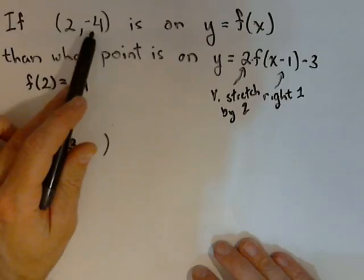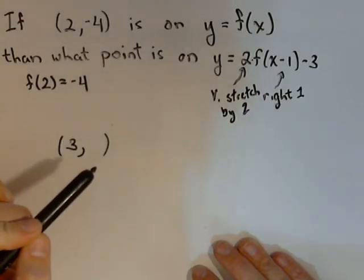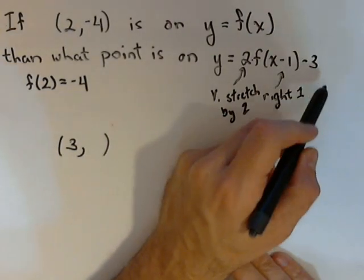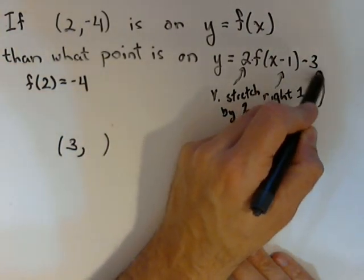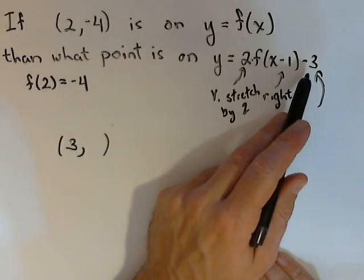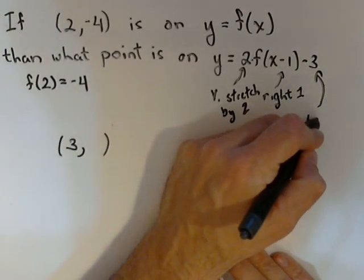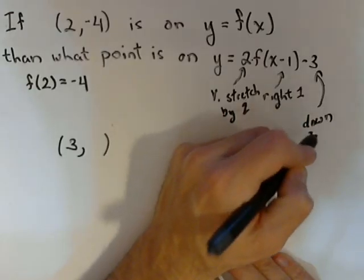Our old y-value was -4. Our new y-value is going to be -8 when it's doubled. But we have one more vertical transformation, and that's this -3 here at the end. What that's doing is it's going to subtract 3 off of all our y-values, so it's going to go down by 3.